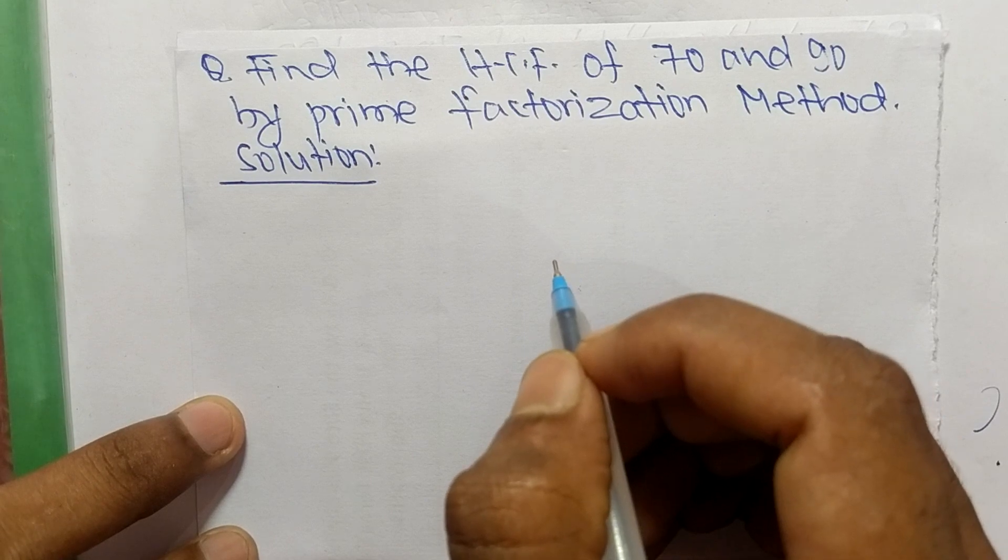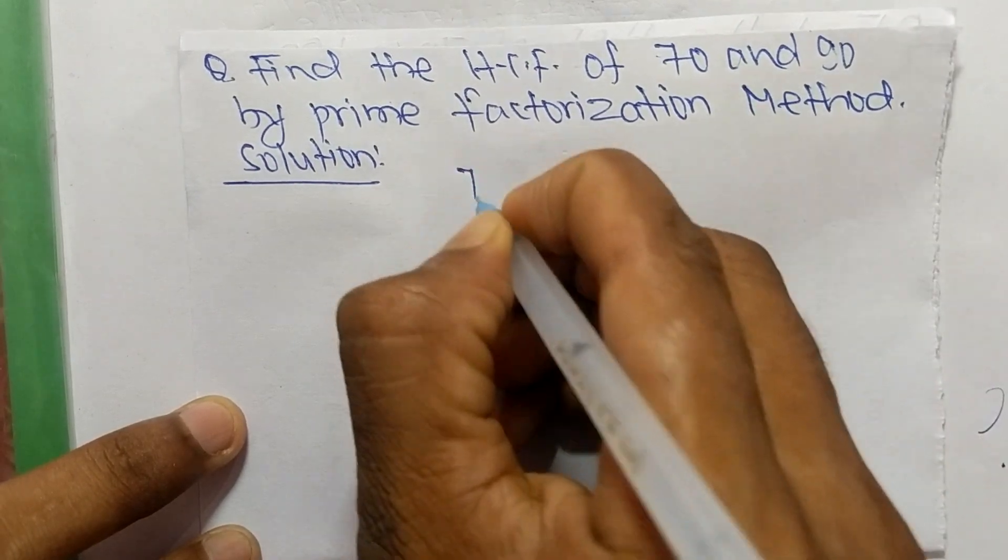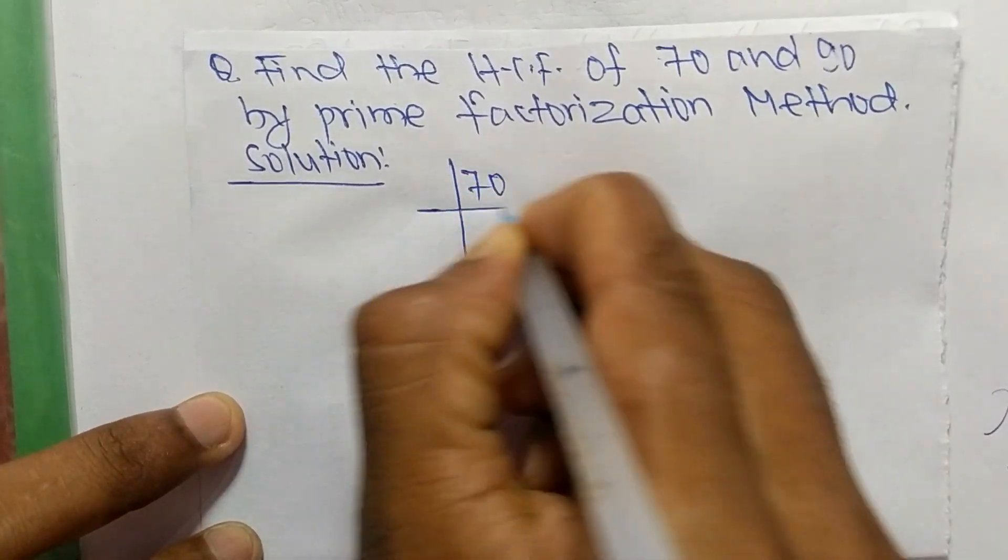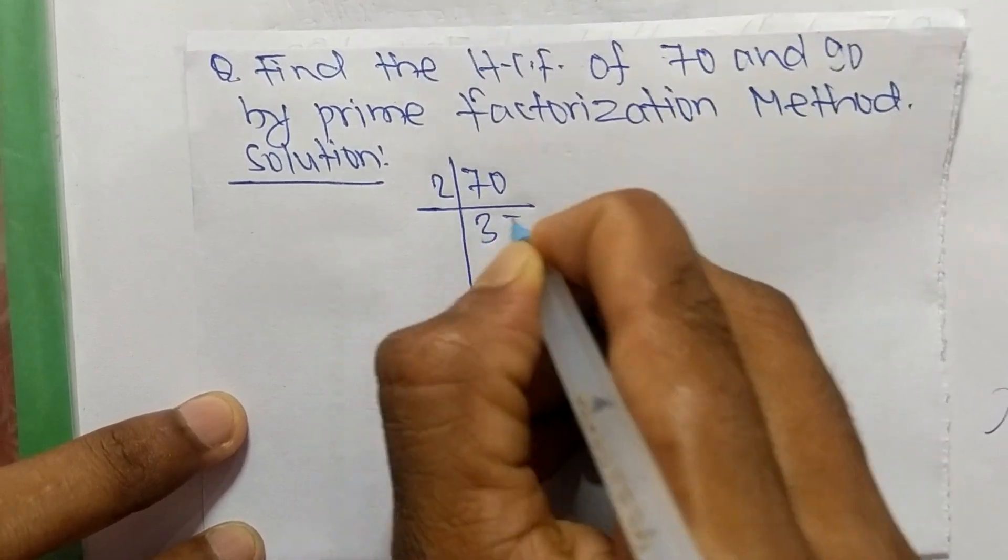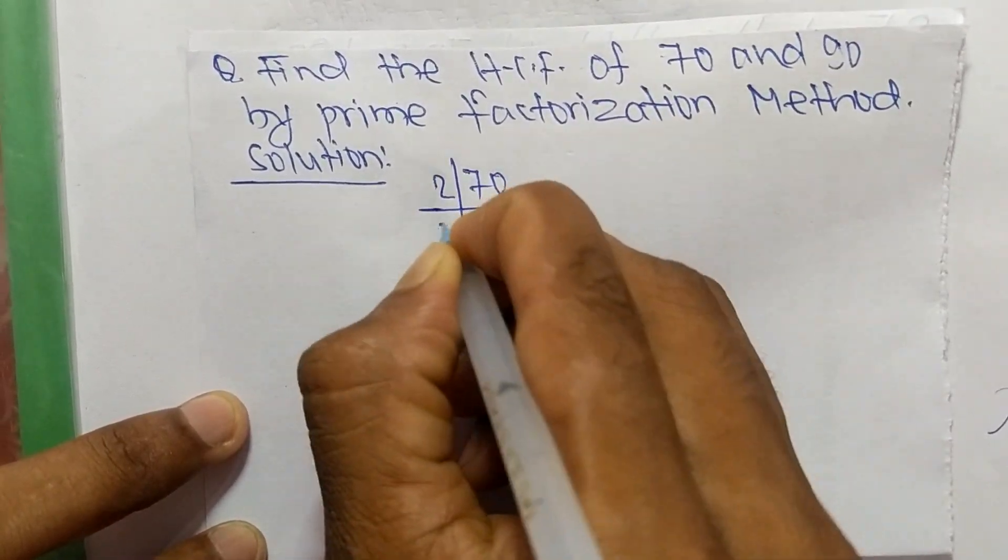So first, we find out the prime factors of 70. It is 2 times 35 means 70, 5 times 7 means 35.